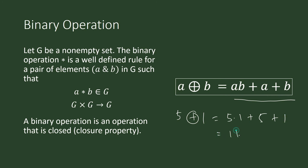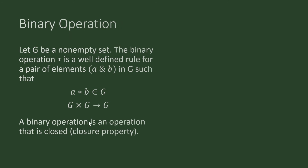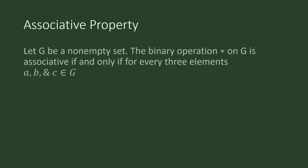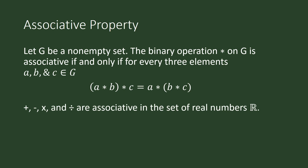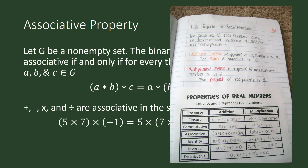Associative property: let g be a non-empty set. The binary operation star on g is associative if and only if for every three elements a, b, and c in g, (a star b) star c equals a star (b star c). This means you can change the grouping with which you are applying the operation and the result is the same. This is not the first time you are seeing the associative property — you may recall it from the set of properties for real numbers covered at the beginning of the school year.